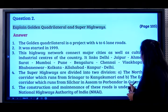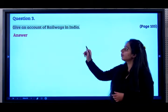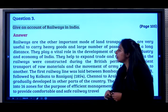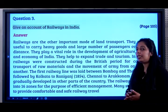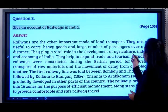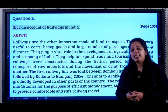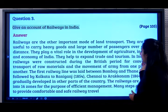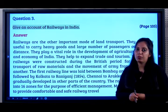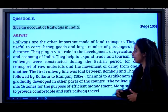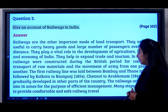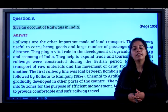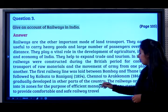Question 3: Give an account of railways in India. Railways are an important mode of land transport, very useful for carrying heavy goods and large numbers of passengers over long distances. They play an important role in the development of trade, tourism, and the economy. Railways were constructed during the British period to carry army and raw materials. The first railway line was laid between Bombay and Thane, and after independence it developed greatly. There are 16 zones in India for better and efficient management.